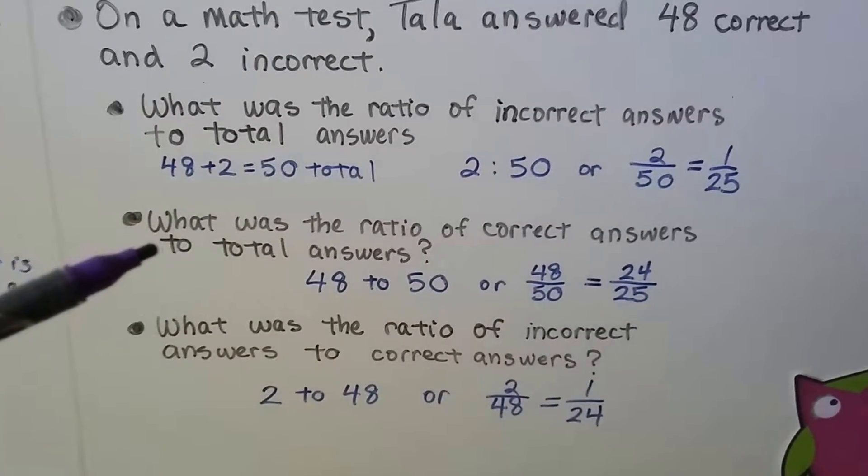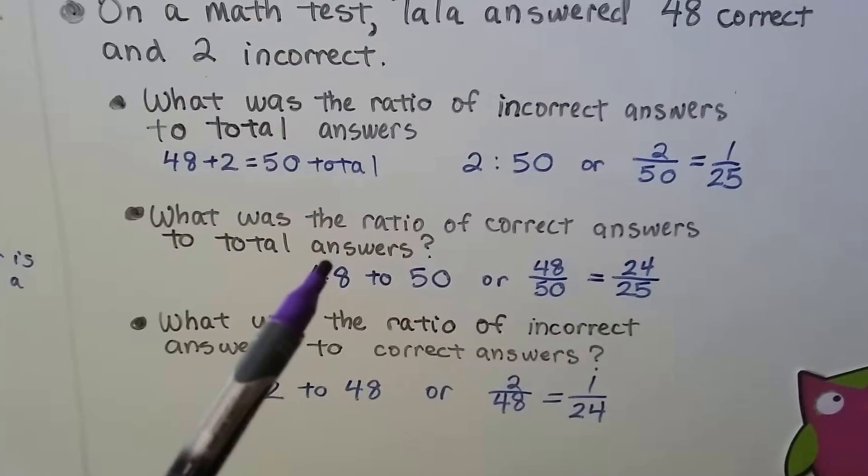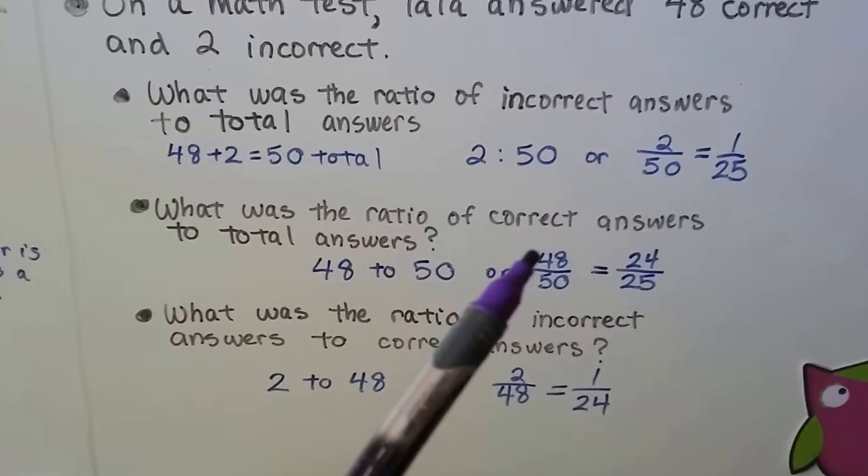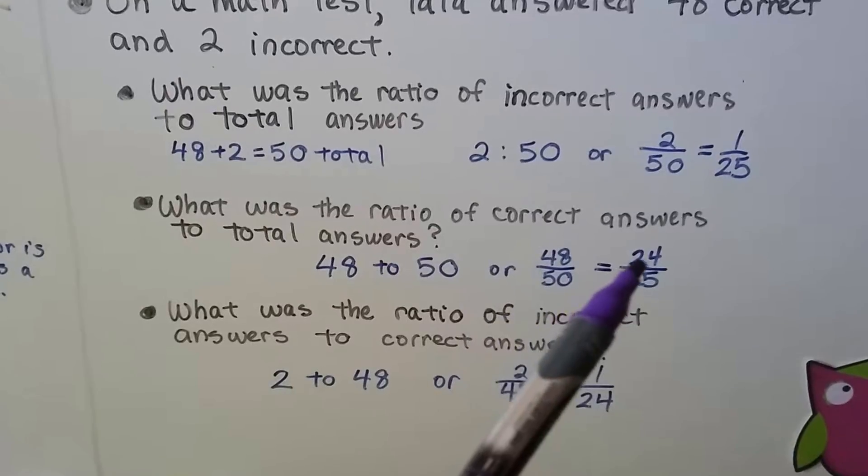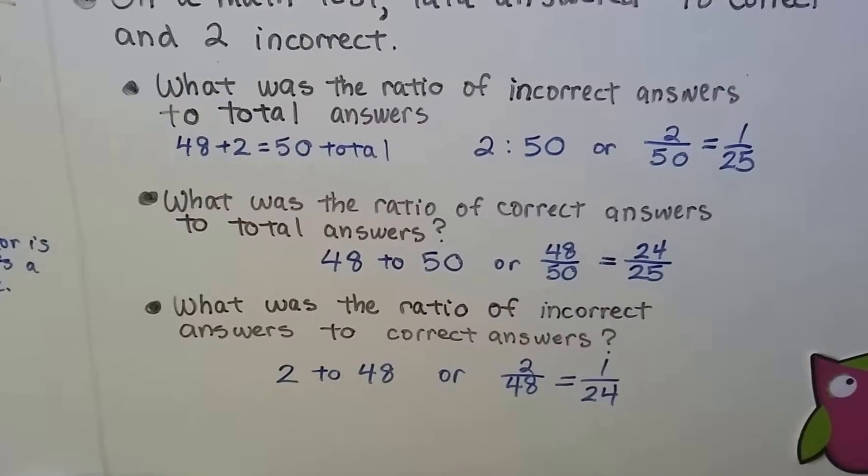What was the ratio of correct answers to total answers? 48 were correct, there were 50 total. That's 48 to 50, which can be reduced to 24 to 25.